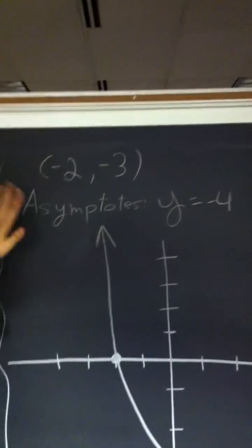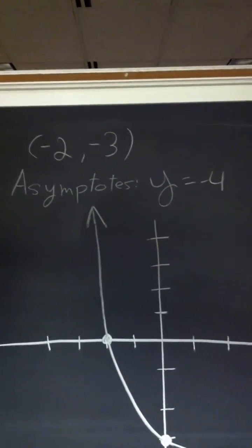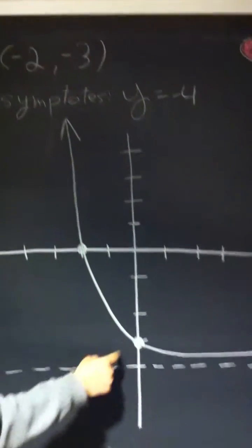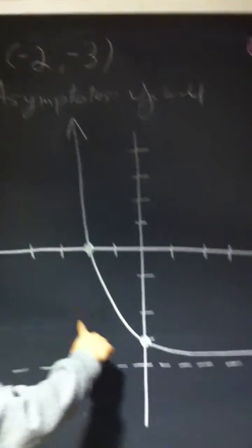So then there you go, you're all set to graph. So negative 4 is right here. That's my asymptote. And negative 2, negative 3. You draw the graph.